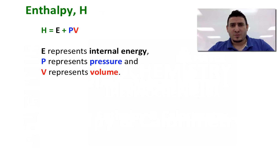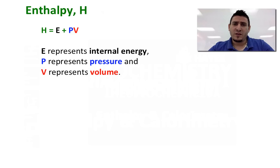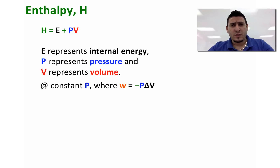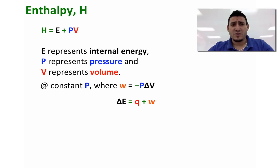Starting with enthalpy, with the symbol H, enthalpy is defined as H equals E plus P multiplied by V, where E is the internal energy, P is pressure, and V is volume. Now at constant pressure, work is defined as minus P multiplied by delta V.